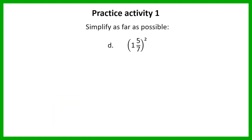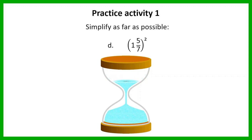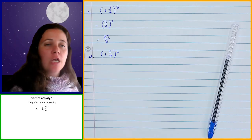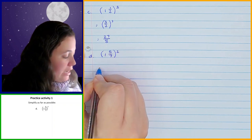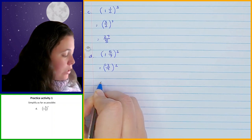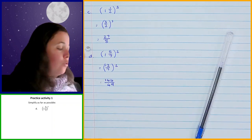Then question D: we've got 1 and 5 over 7 in brackets squared. First of all, it's a mixed number, so we're going to convert to an improper fraction. So 1 times 7 is 7, plus 5 is 12. So that gives me 12 over 7, and that we need to square. When I square the 12, I get 144. When I square the 7, I get 49. So you should have got 144 over 49 for question D.